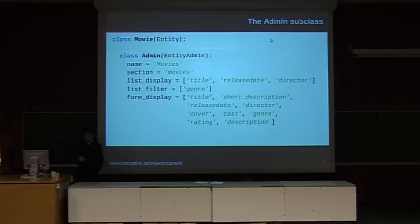Once we've defined our model, we define how to visualize it by adding an admin inner class to your movie class. This admin inner class extends the entity admin class, a Camelot base class which says how your entity should be visualized. The list display attributes specify which fields should be visible in a list of movie objects, and the form display attribute is a list of fields that should be present on the form.